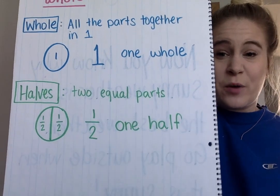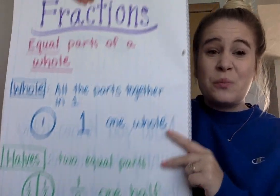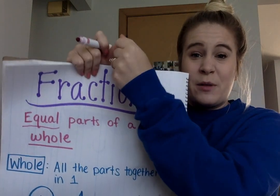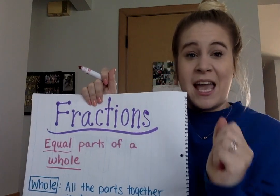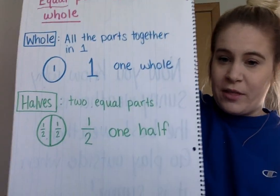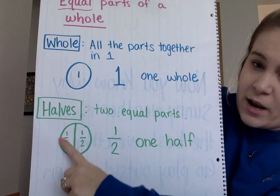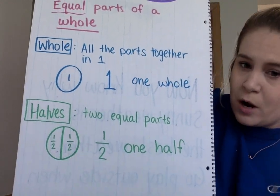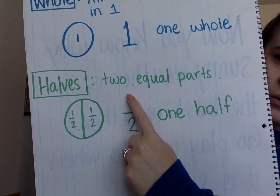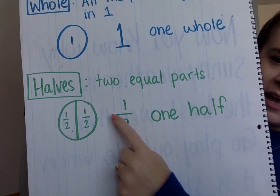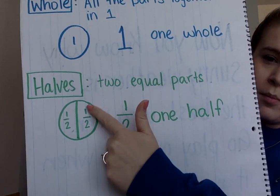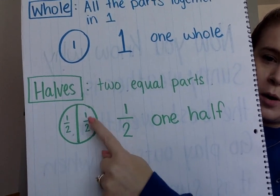Halves is when you break something into two equal parts. So maybe there are two of us and I only have one cookie, so I'm going to break it in half and share half of my cookie with you. Then we each have half of a cookie — we both have the same amount. So one half is when it's broken into two parts. It looks like this — it's called a fraction. It's a one, then a line, and a two underneath it, because one half is one part out of two parts altogether.